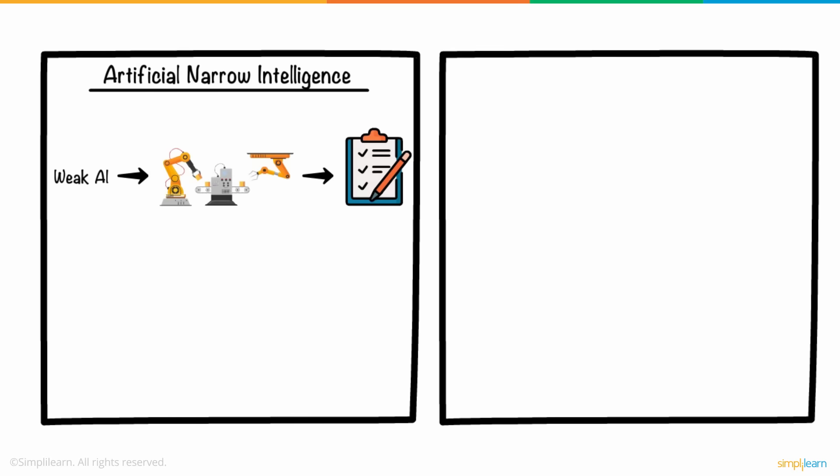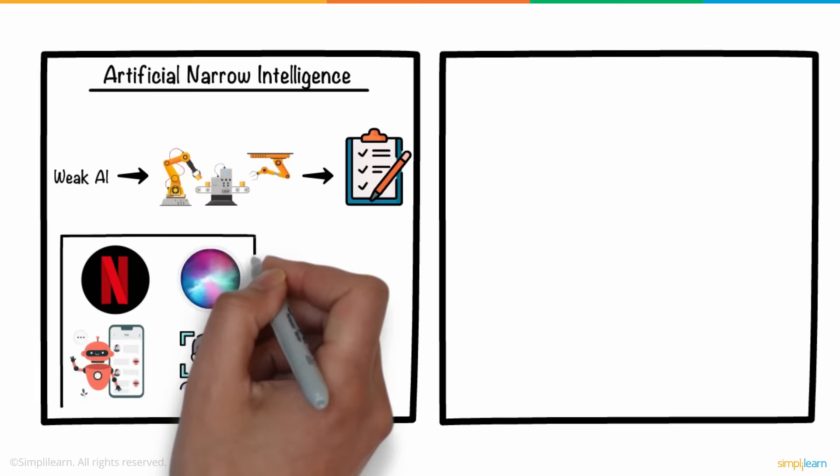Netflix, Siri, chatbots, and facial recognition systems are all examples of artificial narrow intelligence. Next up,